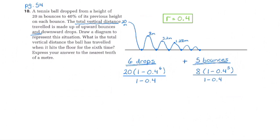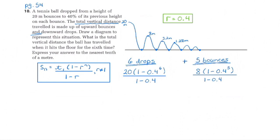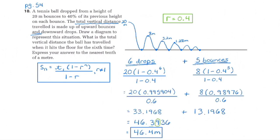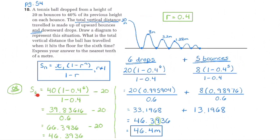We'll use the formula with 1 minus r in the denominator since r = 0.4. For the drops: term one is 20 meters, common ratio 0.4, six terms. For the bounces: term one is 8 meters, same common ratio, five terms. Adding both sums gives the total vertical distance. Alternatively, some people combine drops and bounces: treating each round trip as 40 meters for term one, same ratio, six terms — but then subtracting the initial drop up, since the ball only drops that first 20 meters, giving the same total vertical distance.